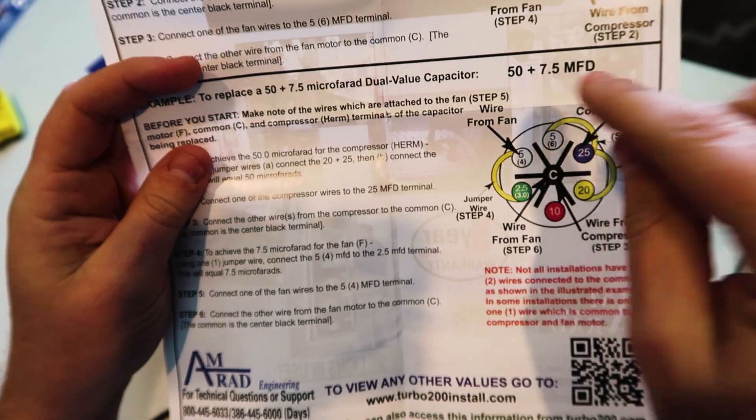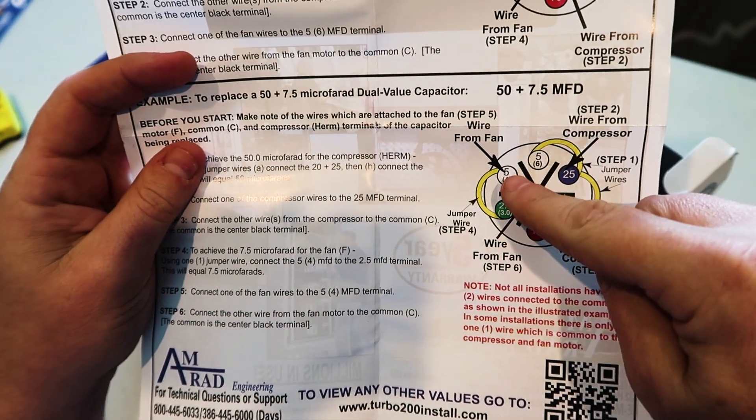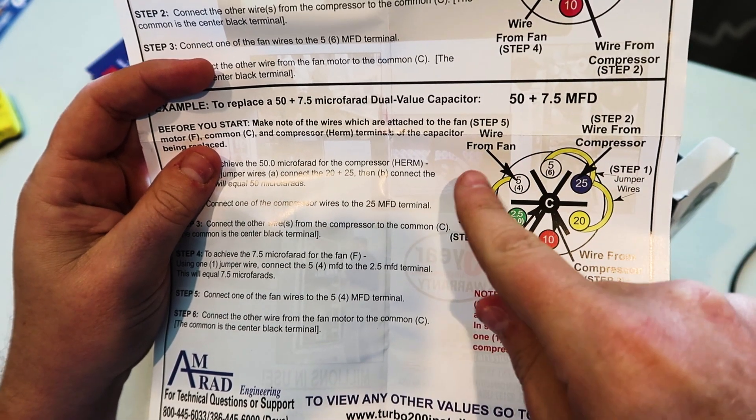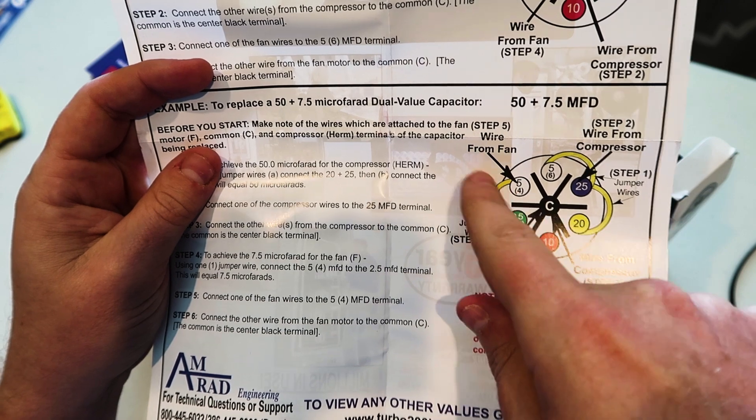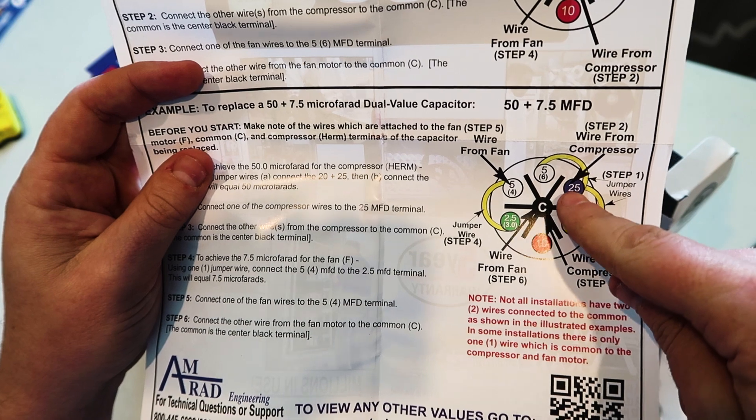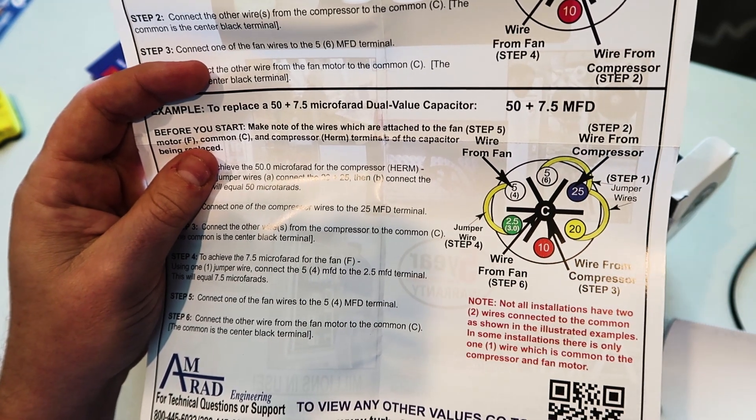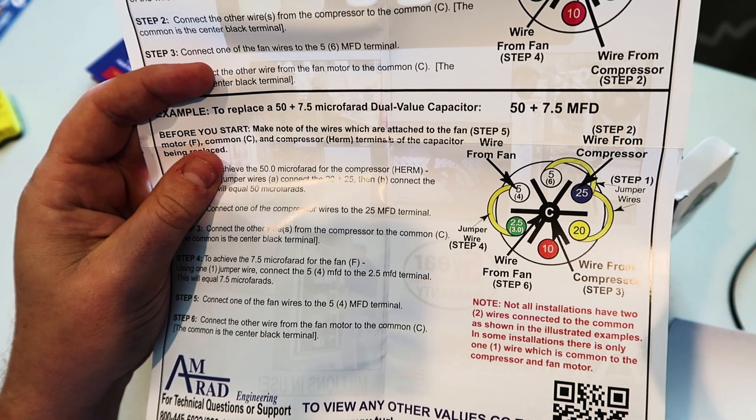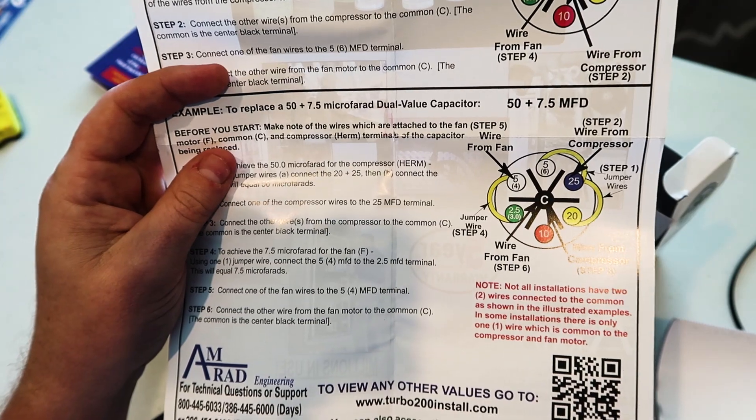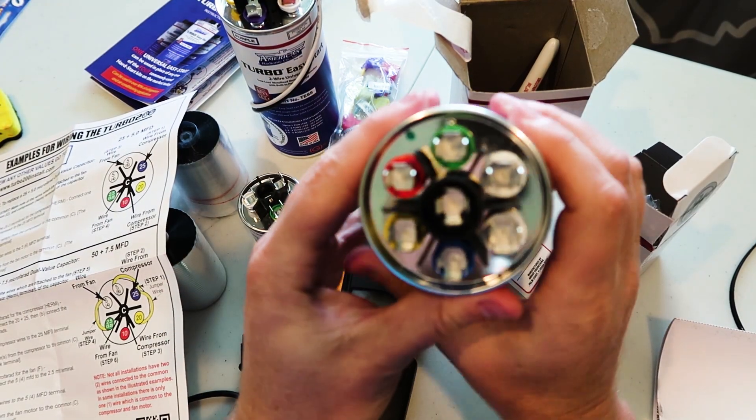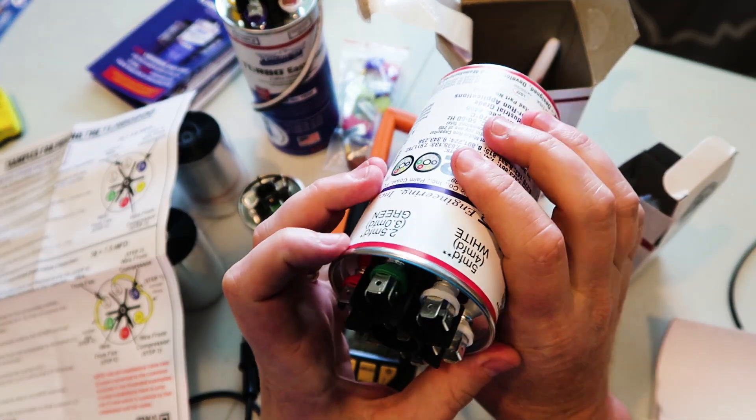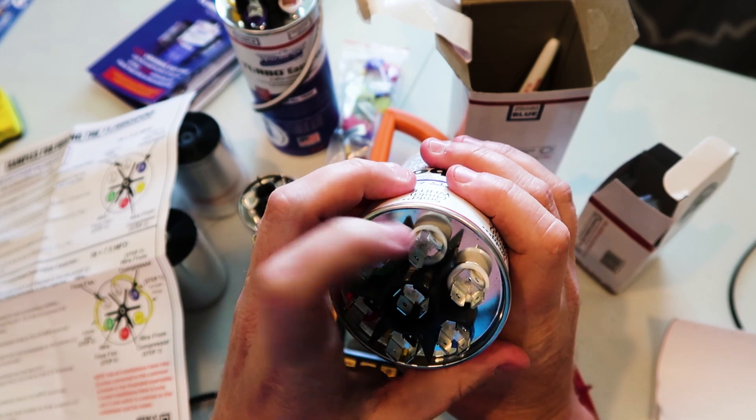But let's say you needed to do a 50 by 7.5. Well, now your 5 microfarad, you would connect to a 2.5. That makes 7.5. What it's saying with that sticker at the initial thing is that you want to wire the wire from your fan to the larger of the two. So you'd put your fan on this 5, not on the 2.5. You put your compressor on the 25, not on the 5 or 20. So if it's 50, it's 25 plus 5, that's 30, plus 20, that's 50. Compressor goes here, your two commons go there. So your commons are always connecting here. Connect your fan to the highest of the two.